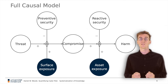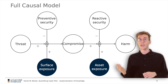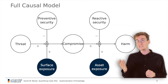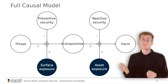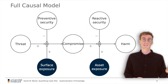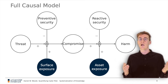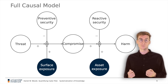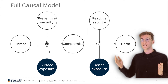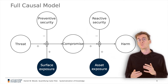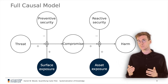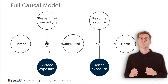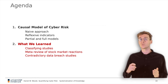In the same way, we can also differentiate between the role of exposure before an incident and also after an incident. Surface exposure relates to attack factors used to achieve compromise, such as the number of accounts with administrative privileges, whereas asset exposure relates to factors amplifying harm resulting from a compromise, such as the volume of personal data of customers retained. This full diagram is our causal model, and so far we have only provided a normative contribution explaining how we think the research community should quantify cyber risk. The next part of our talk outlines what we learned from the literature.